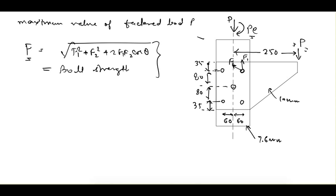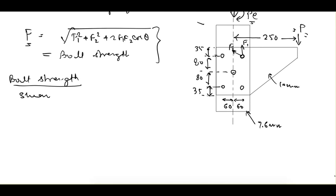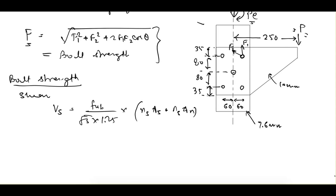We'll equate this maximum force to the bolt strength to find the maximum value of load P. First, let's find the bolt strength — we have to check two criteria: shear and bearing. For shear criteria, the equation is Fub / (√3 × γ_MB) × (Ns·As + Nn·An). We are connecting two plates, so it is a lap joint, which is a single shear case.